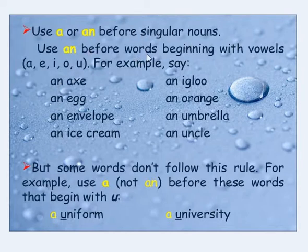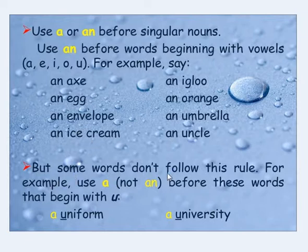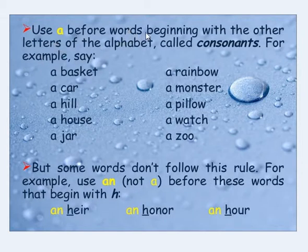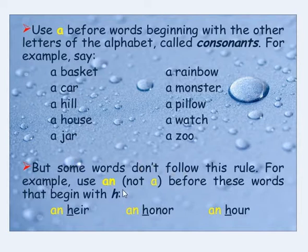Use 'a' or 'an' before singular nouns. Use 'an' before words beginning with vowels — a, e, i, o, u. For example: an axe, an igloo, an egg, an orange, an envelope, an umbrella, an ice cream, an uncle. But some words don't follow this rule — use 'a' not 'an' before these words: a uniform, a university. Use 'a' before words beginning with consonants. For example: a basket, a car, a hill, a house, a jar, a rainbow, a monster, a pillow, a watch, a zoo. But some words don't follow this rule: an air, an honor, an hour.